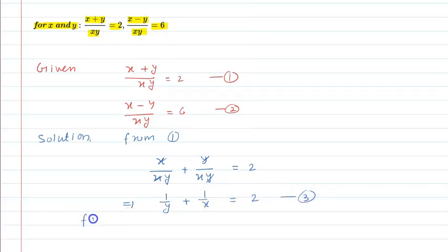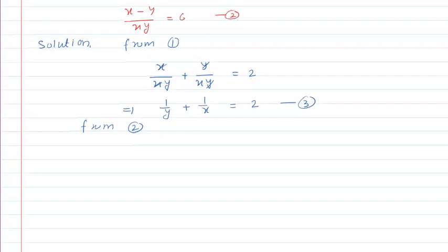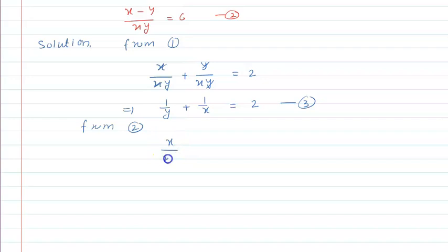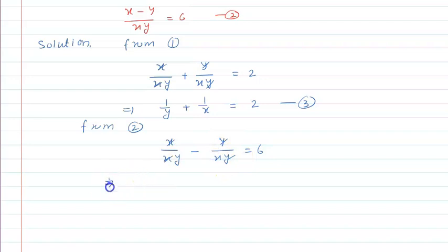Now from equation number 2, we simplify it. Separating out: x upon xy minus y upon xy is equal to 6. Here x cancels with x and y cancels with y, so this implies that 1 upon y minus 1 upon x is equal to 6. This is equation number 4.